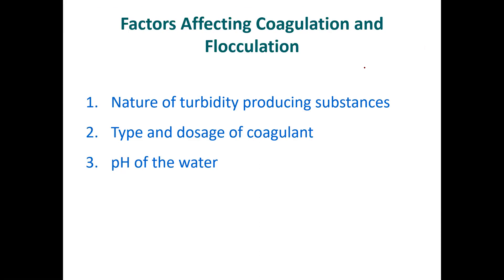Every water source is different. The Athabasca River has lots of clay and silt — turbidity is one of the major issues they're dealing with. That even changes with the seasons; during spring runoff the water can be very cloudy. They have to monitor the alum levels constantly. At the water treatment plant, they have turbidity meters at many points along the treatment pipeline, all monitored by computer, so they can decide whether to increase the coagulant dosage.